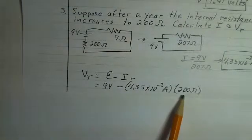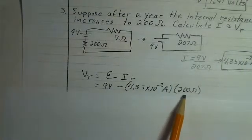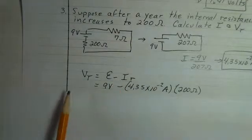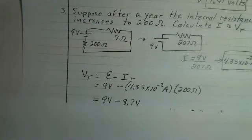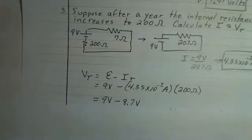We have 200 ohms of internal resistance. We don't use 207 here. We're interested in the resistance inside the battery to give us this change in the terminal voltage. That's a big number. 8.7 volts is across the internal resistor.